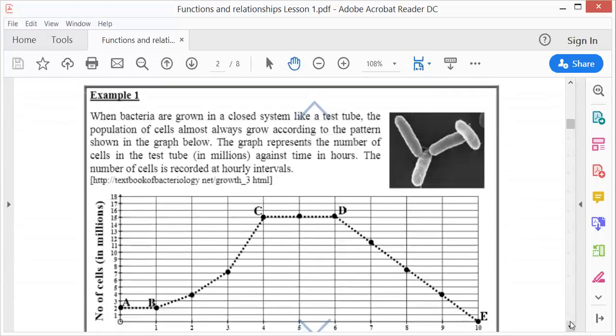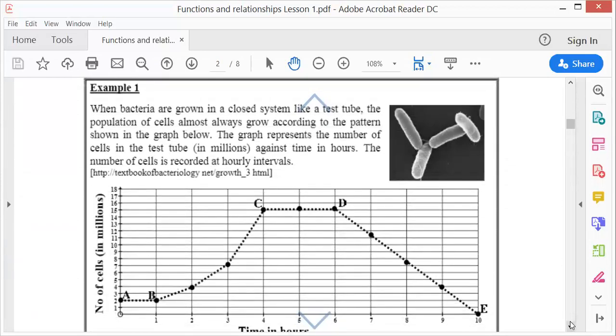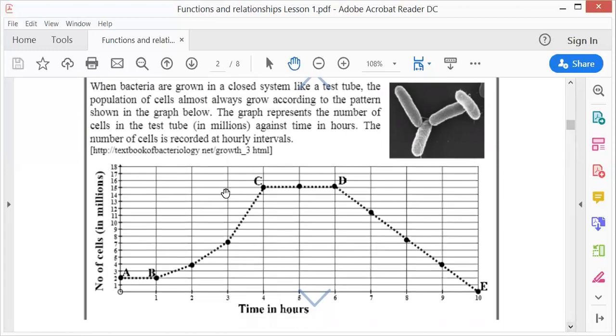Let's do our first example. When bacteria are grown in a closed system like a test tube, the population of cells almost always grows according to the pattern shown in the graph below. The graph represents the growth of bacteria. It's the number of cells in the test tube in millions against time in hours. The number of cells is recorded hourly.